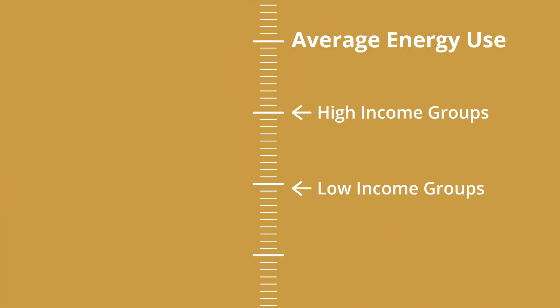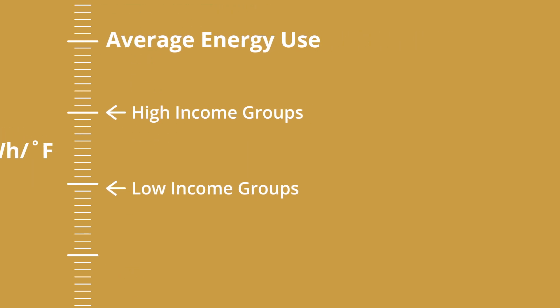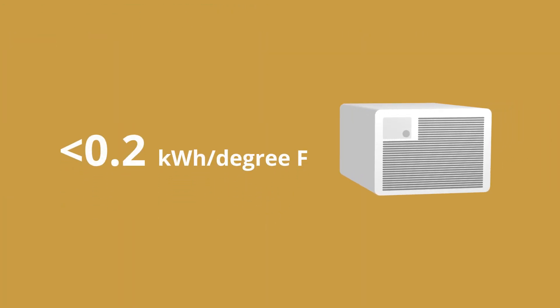That allows for better targeting of energy efficiency deployments as well as energy assistance. One of the key findings in our study is that on average, low income groups are using 1.04 kilowatt hours per degree Fahrenheit less than their high income counterparts. This is concerning because a small window unit would use even less energy than that, meaning that either these households don't have window units, they're not using them, or they are forgoing this energy consumption throughout the summer season.